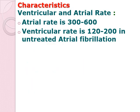Characteristics for your atrial fibrillation: if you compare the rate of atrial flutter and atrial fibrillation, the rate of atrial flutter is 250 to 400. However, for atrial fibrillation, the atrial rate is 300 to 600. The ventricular rate is also higher compared to your atrial flutter — the ventricular rate for atrial fibrillation is 120 to 200. Basically, atrial fibrillation is faster and more disorganized compared to atrial flutter.